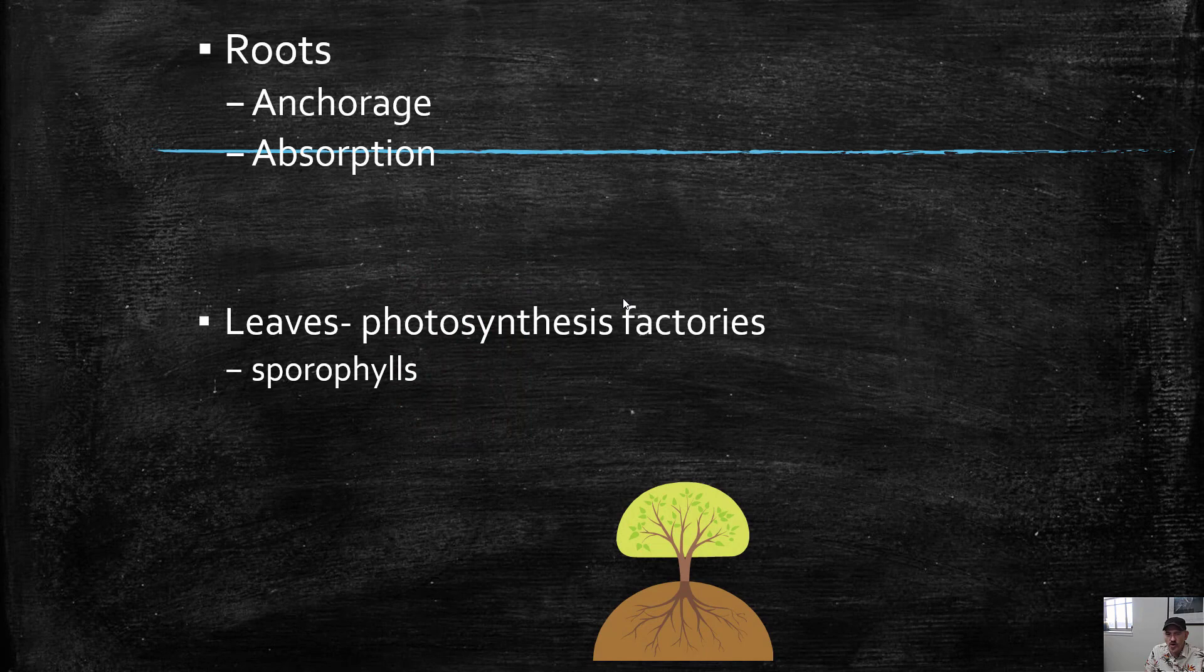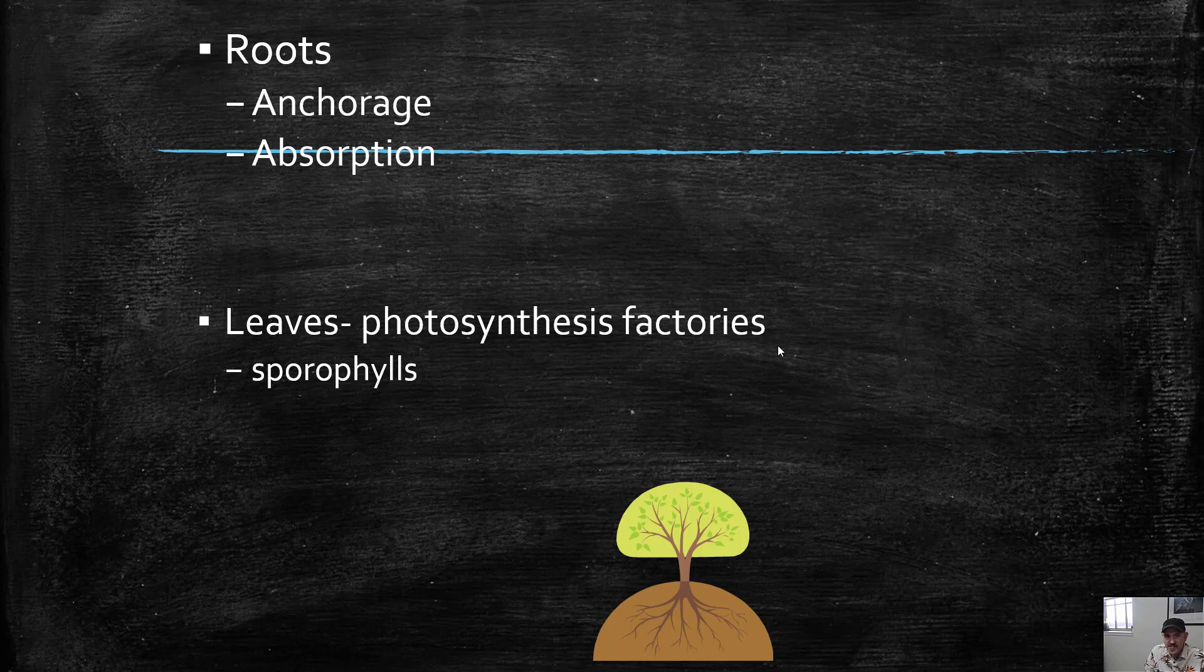Roots, of course, their major jobs are to hold the plant down and to absorb water and minerals. Whereas the leaves are photosynthesis factories. They make sugars for the plant. But a lot of times in different plants, the leaves are also, at least some of the leaves anyway, are sporophylls, meaning that the leaves produce the sporangia for reproduction. They produce those sporangia that make those spores.